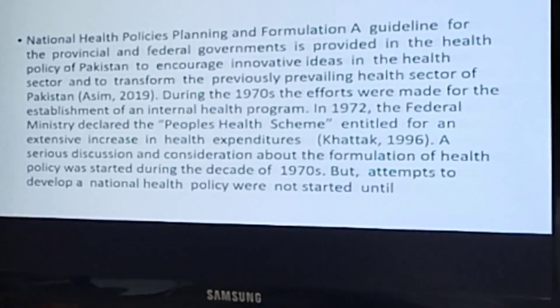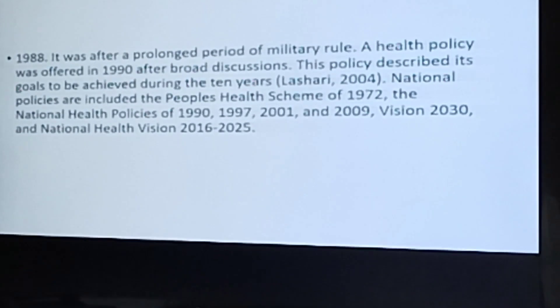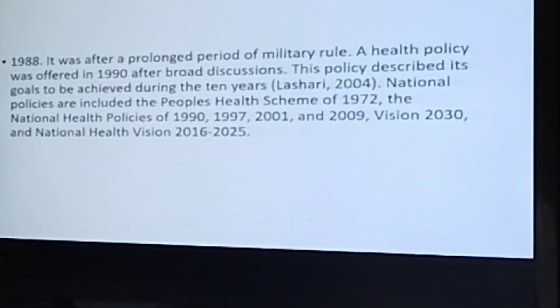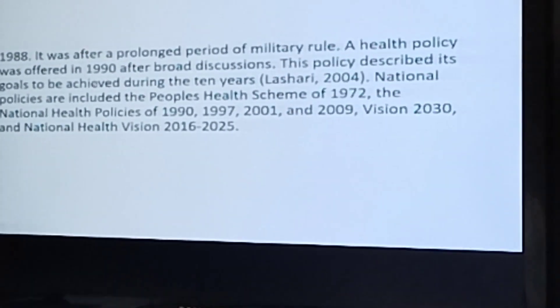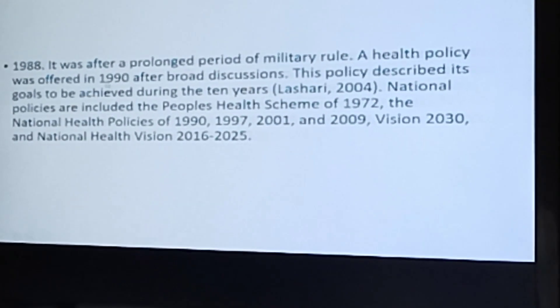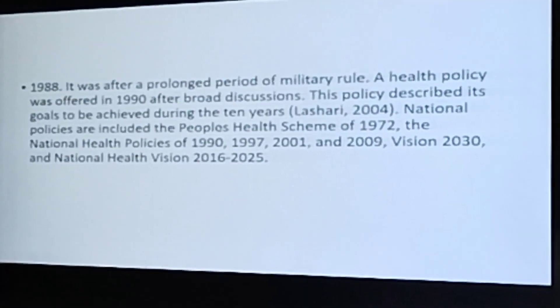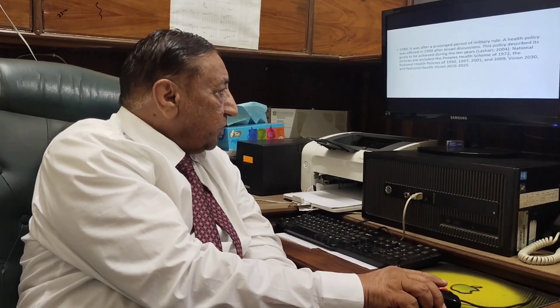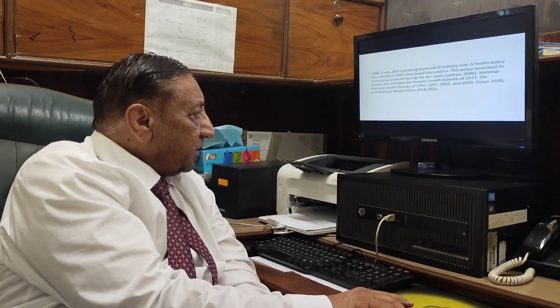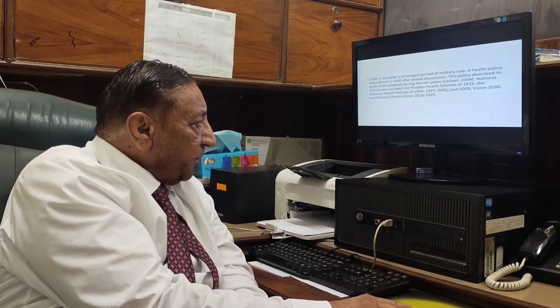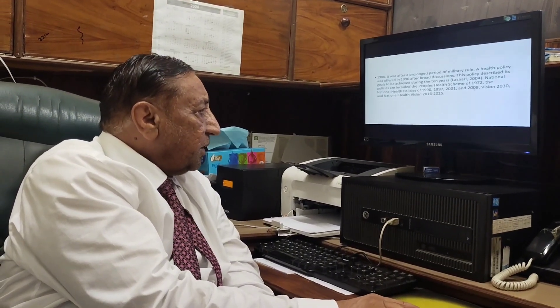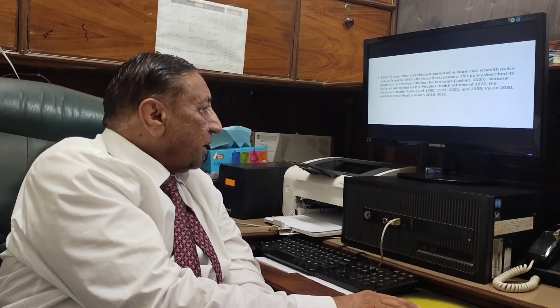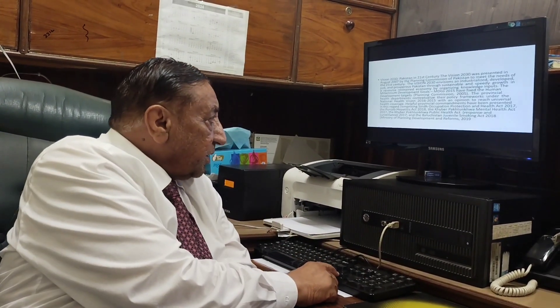National health policy planning resumed after a prolonged period when the first formal policy was offered in 1990. The policy describes its goals to be achieved during ten years. Pakistan's national policies include: the People's Health Scheme of 1972, then 1990, 1997, 2001, and 2009. We also have the National Health Vision 2016–2025. There is still one year remaining for this vision. Pakistan's Vision 2030 aims for good health of all Pakistani people through the 21st century.